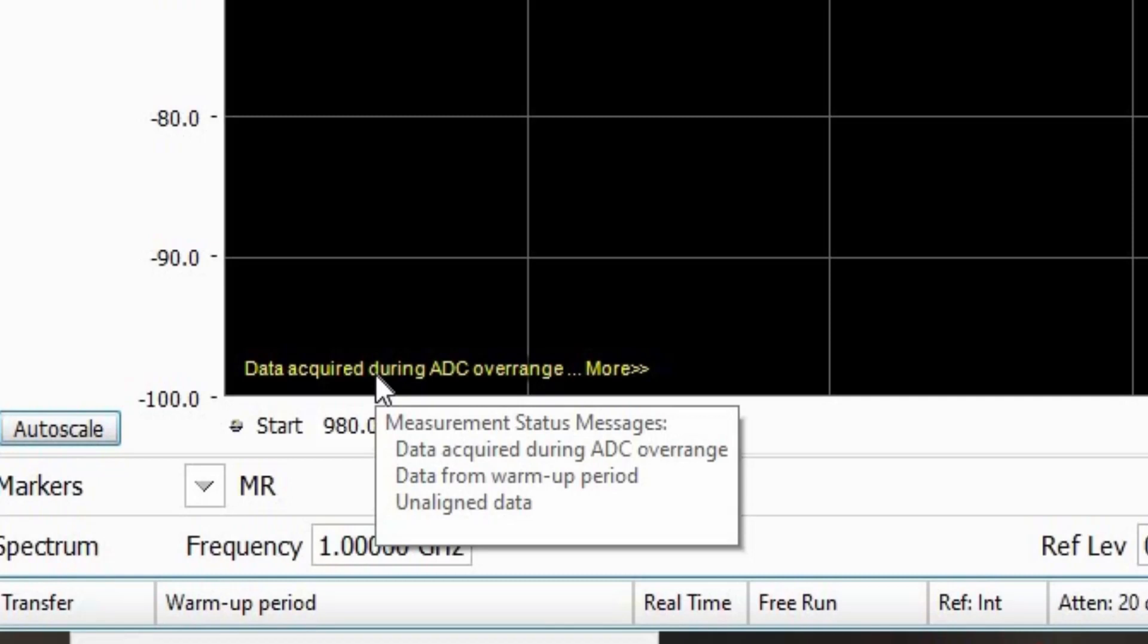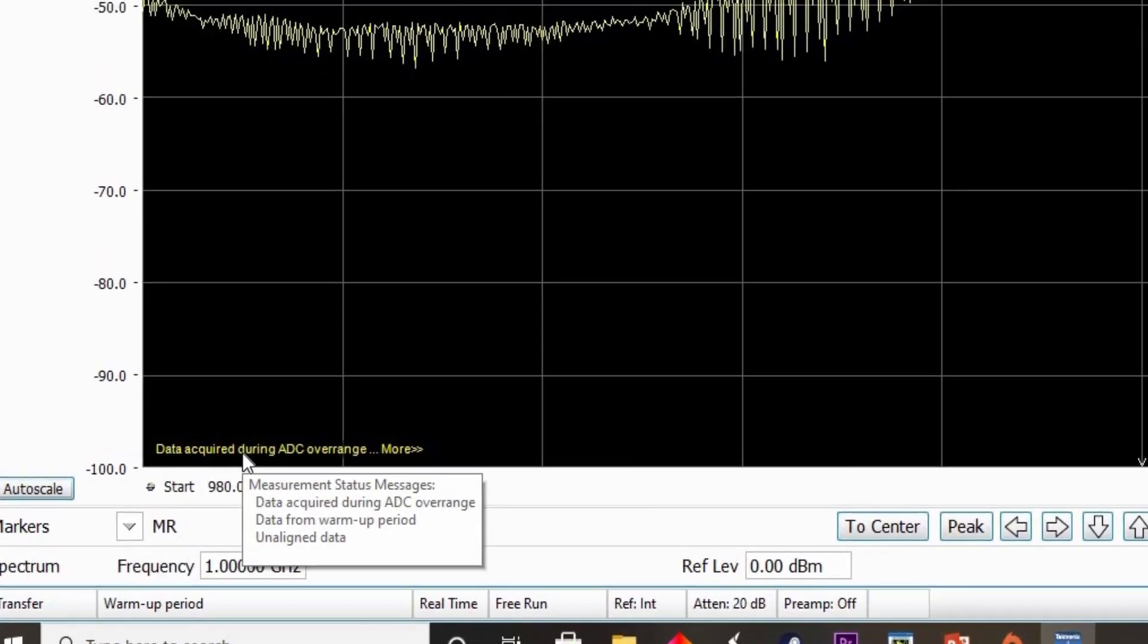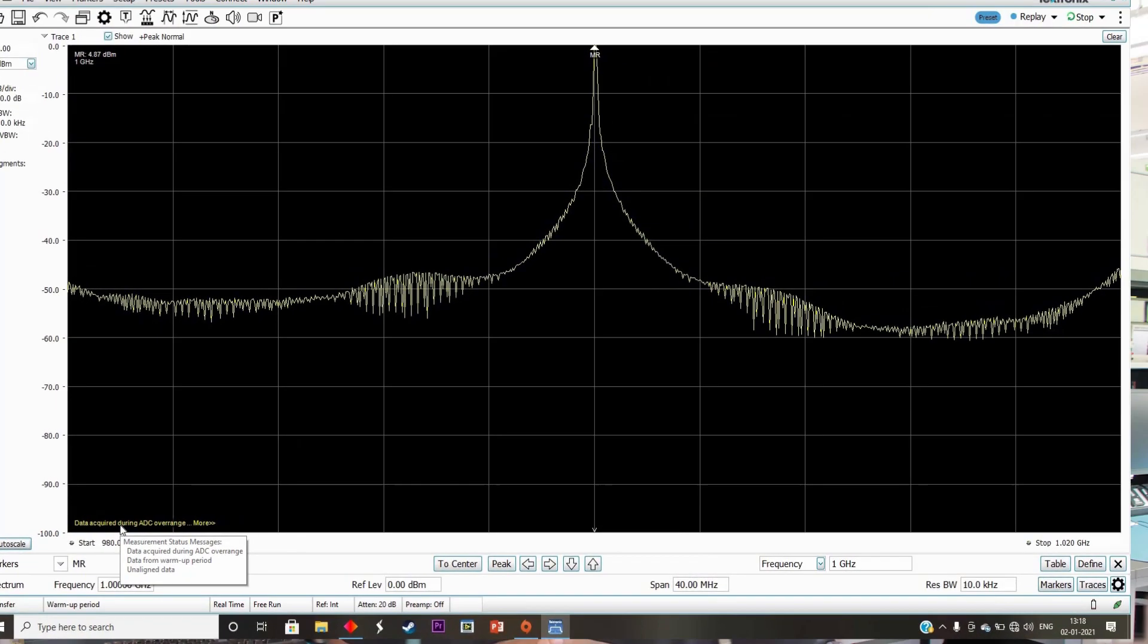Especially when working with wideband signals where it is difficult to guess the peak power, when we try to analyze these signals in a spectrum analyzer we sometimes see spectrum analyzer software like SignalVu throwing up an error mentioning ADC overload. Hello everyone, I am Koteswar from Tektronix. I'm an RF applications engineer and tech enthusiast.